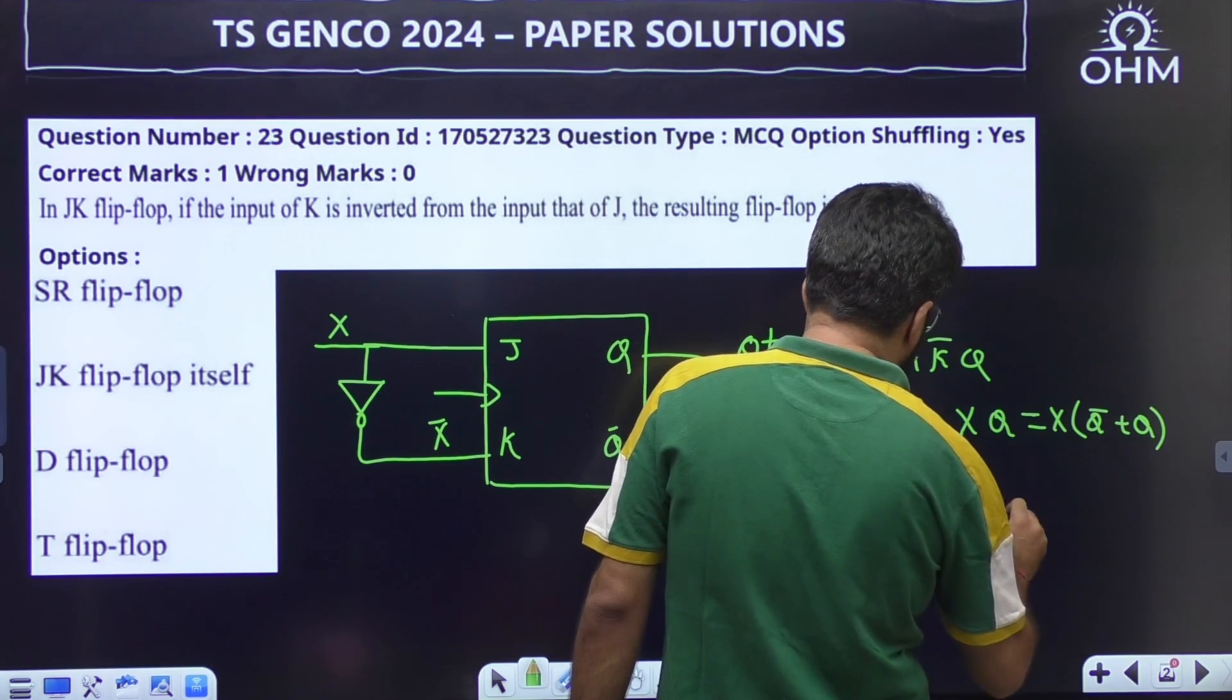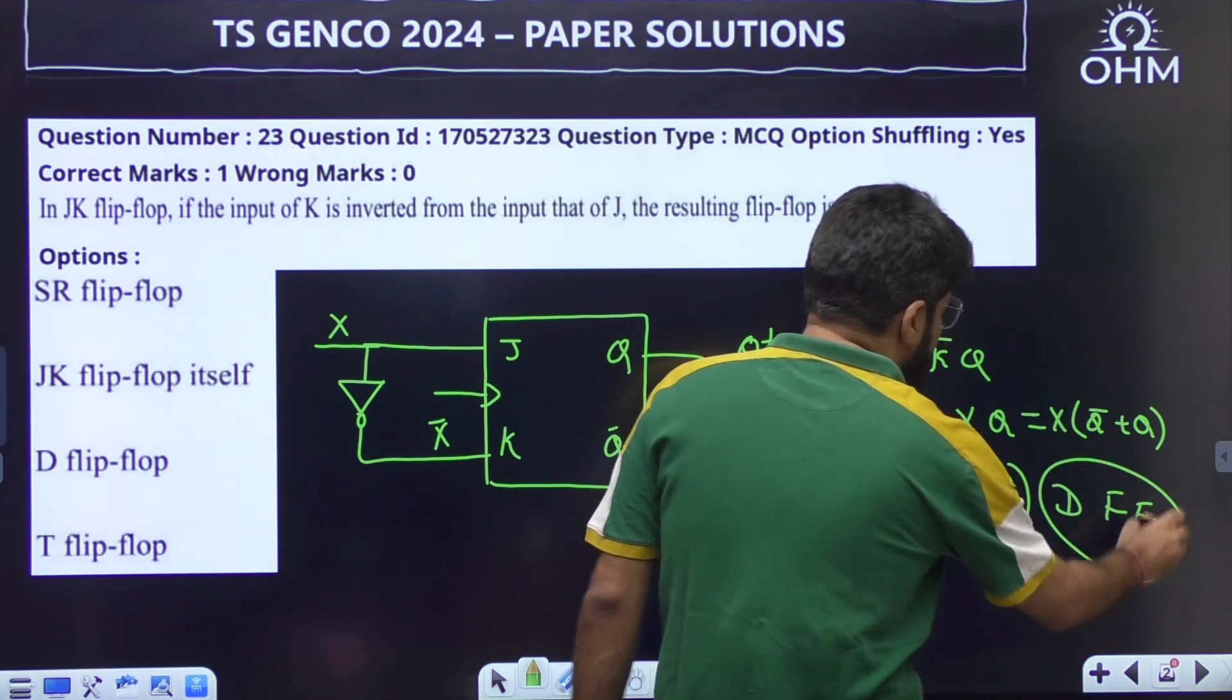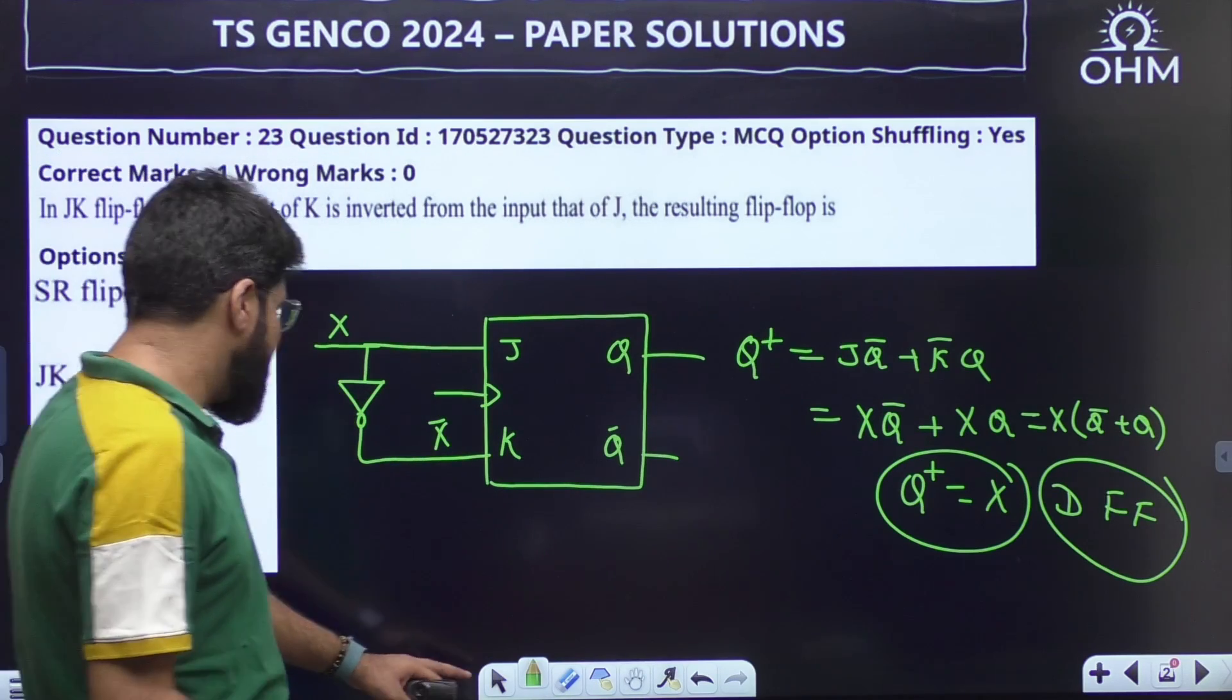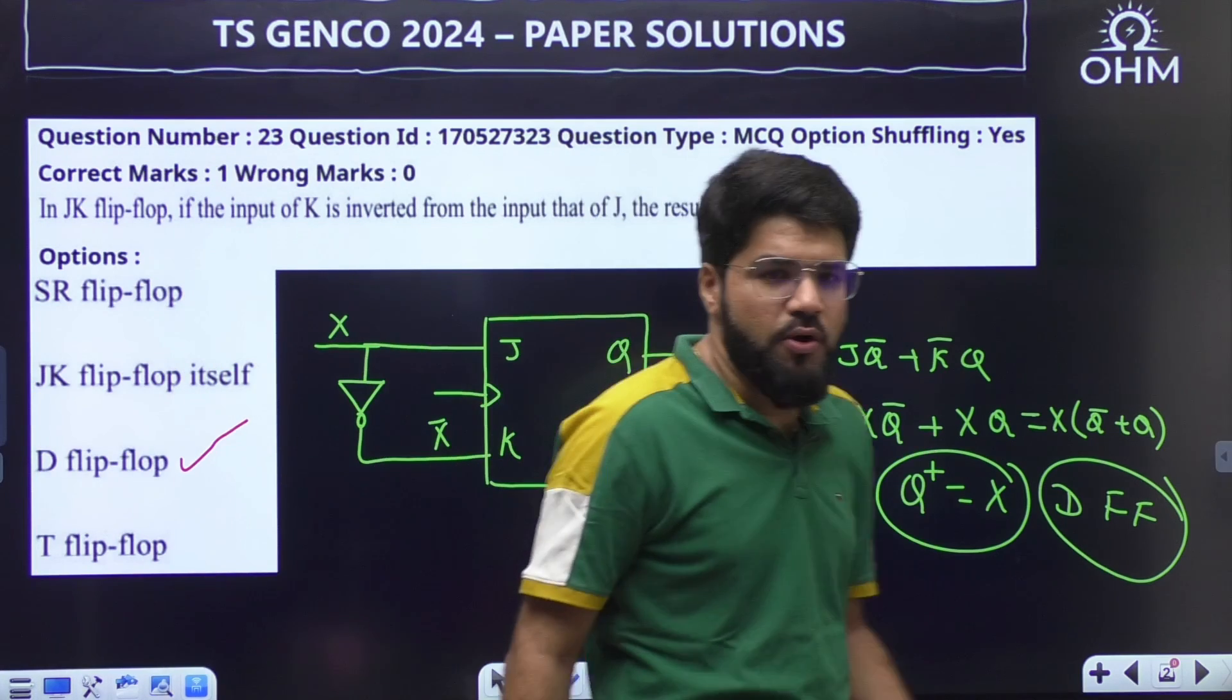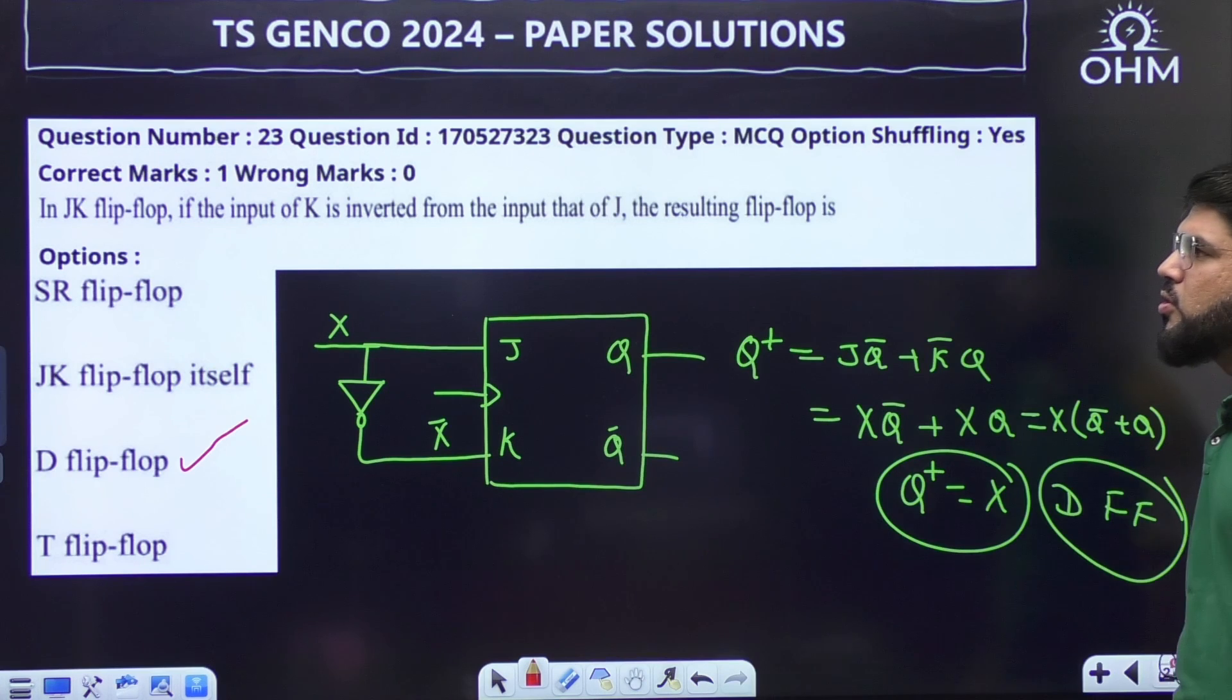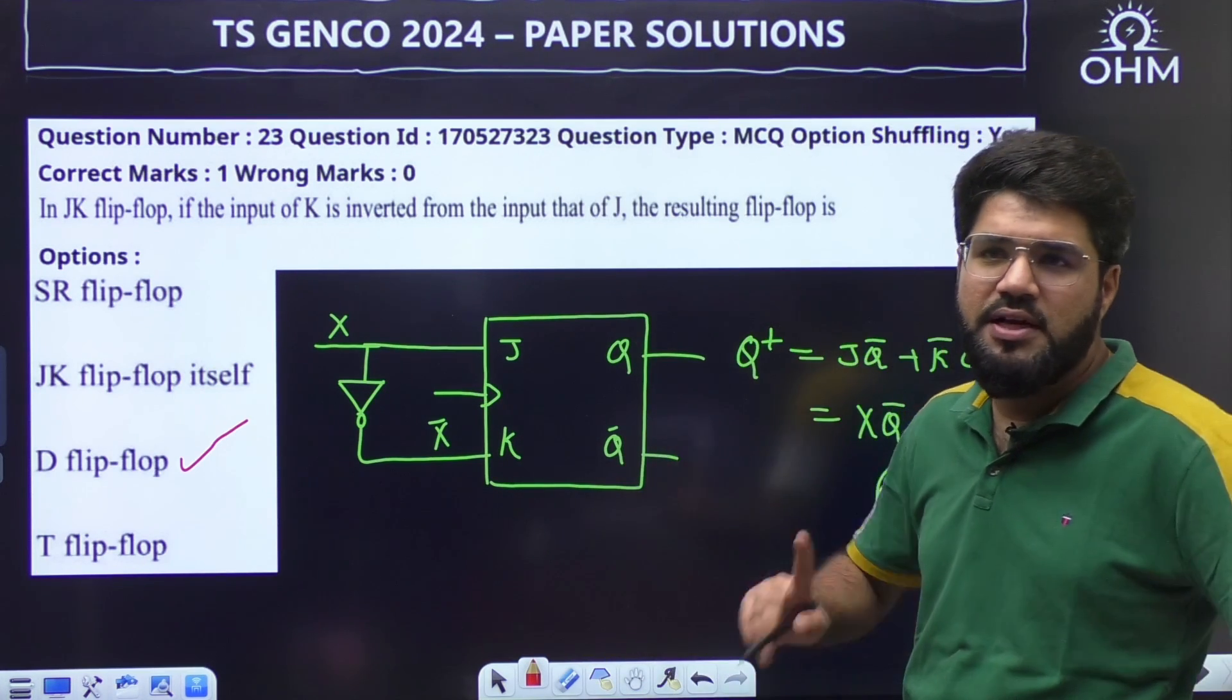And hence Q plus equal to X which is just like a D flip-flop. You can now name it as the D input, Q plus equal to D, the data copy of the delay latch. So it's a D flip-flop. Correct answer is option number C. If you have thoroughly gone through your notes this is one of the direct questions. So let's go to the next one. This is only one question from digital electronics that is there in the paper.